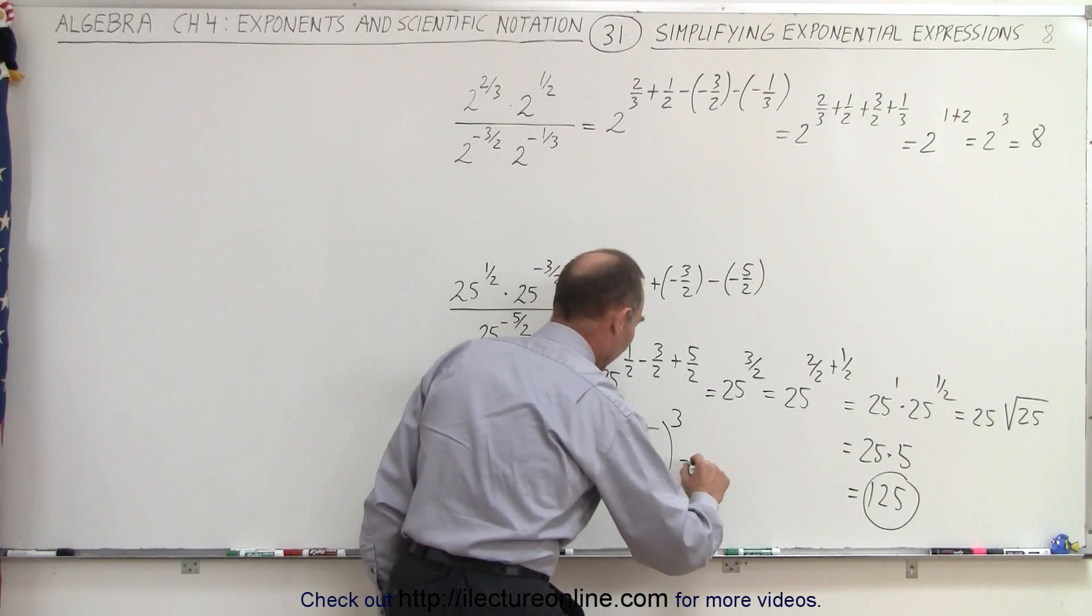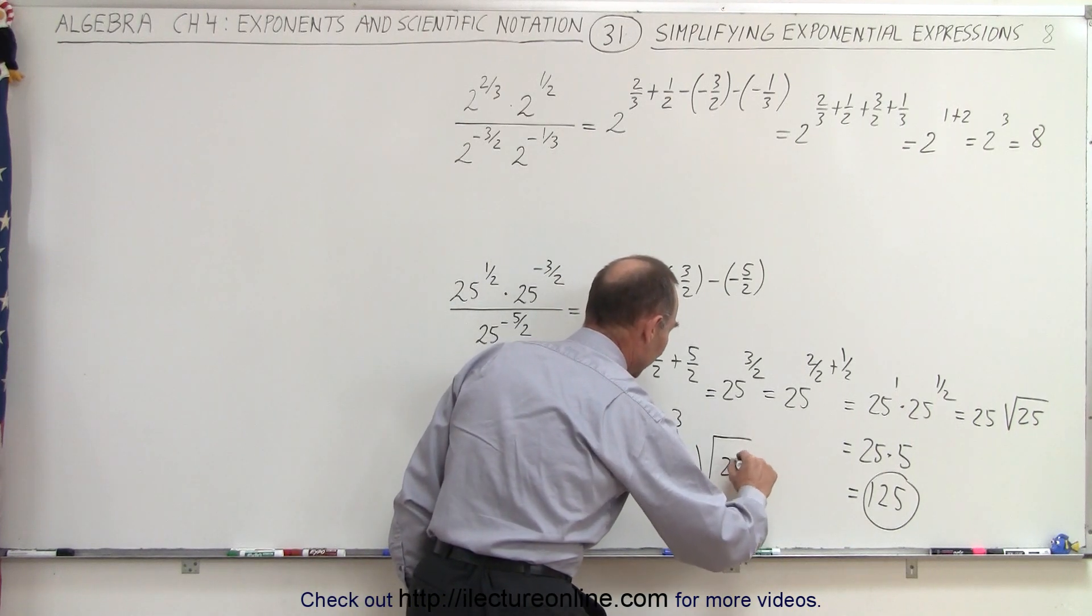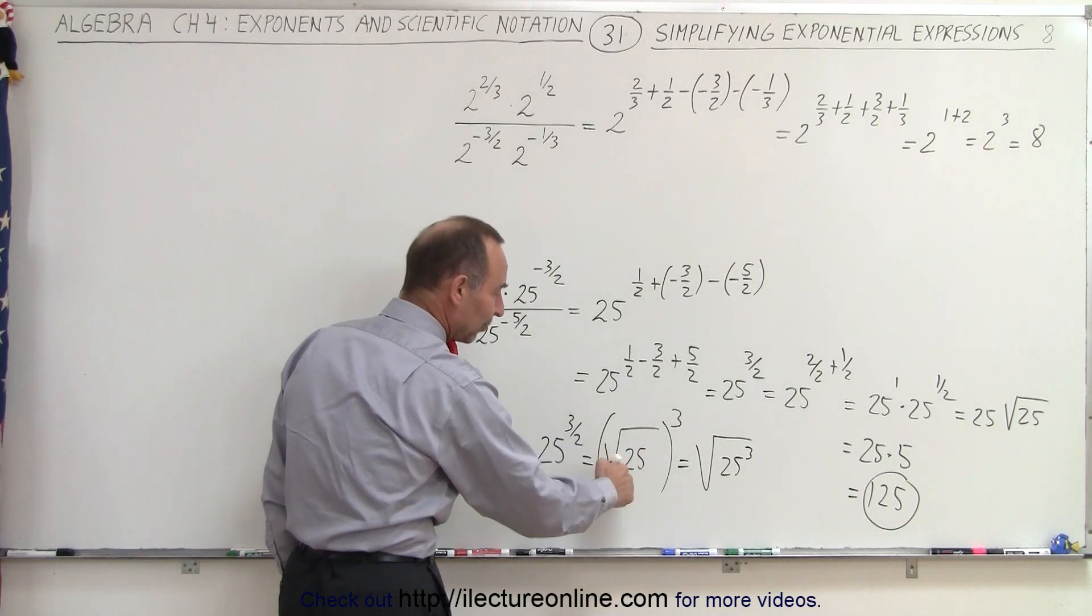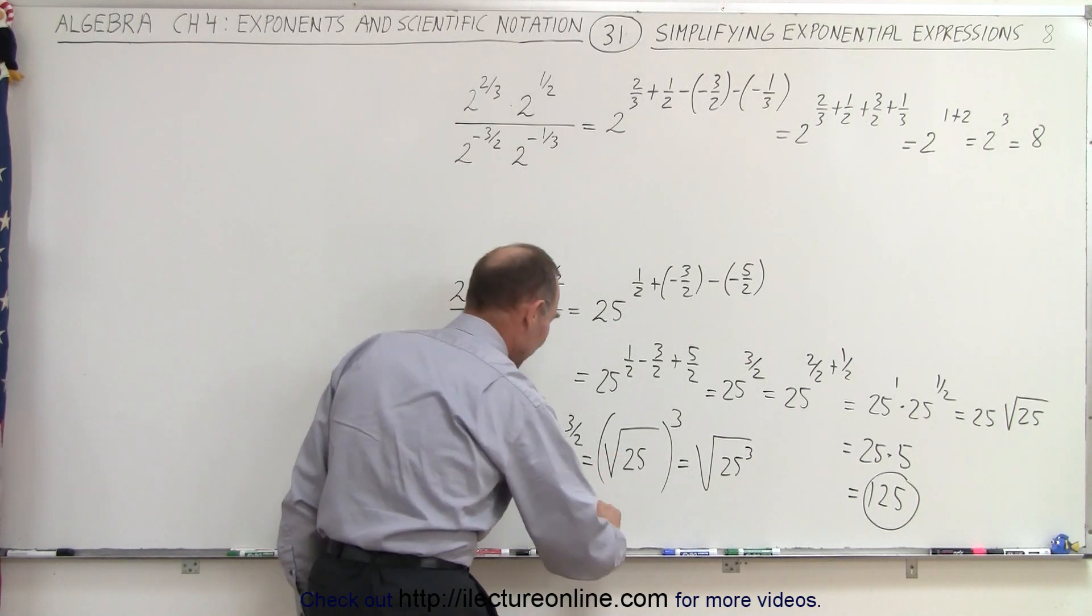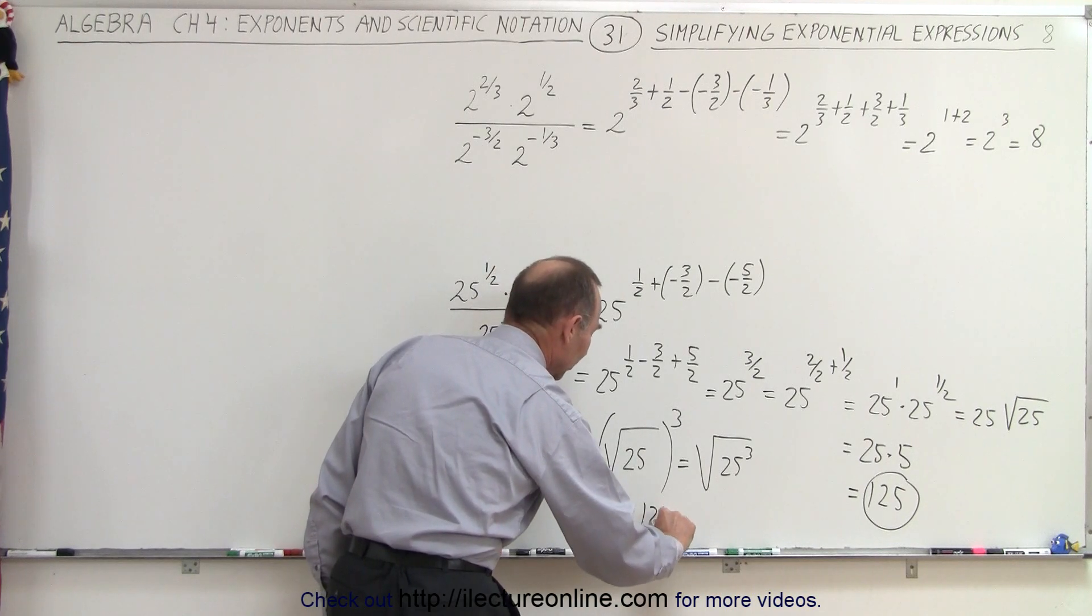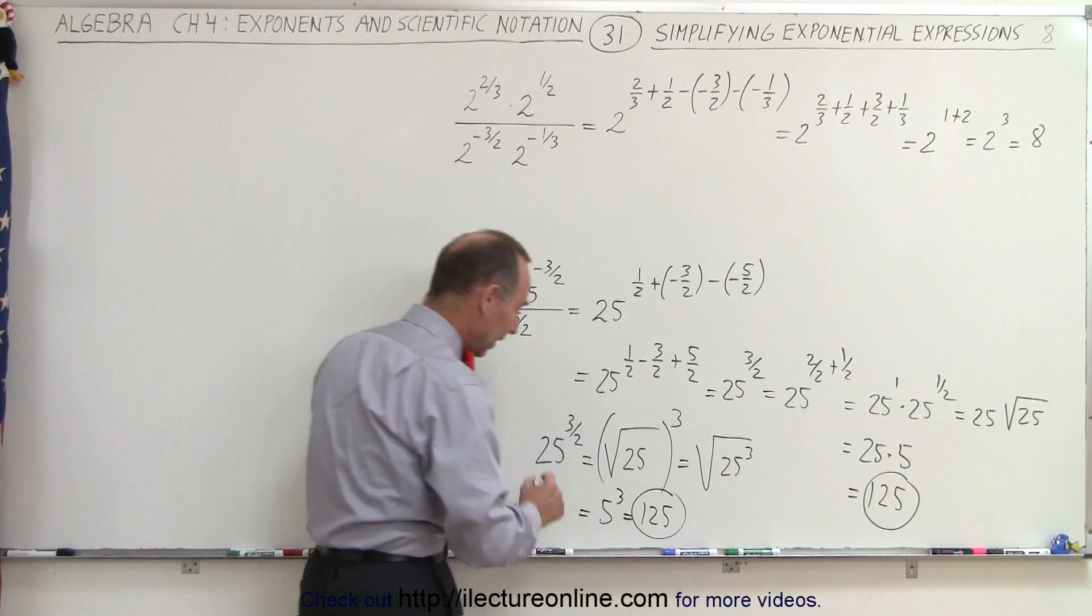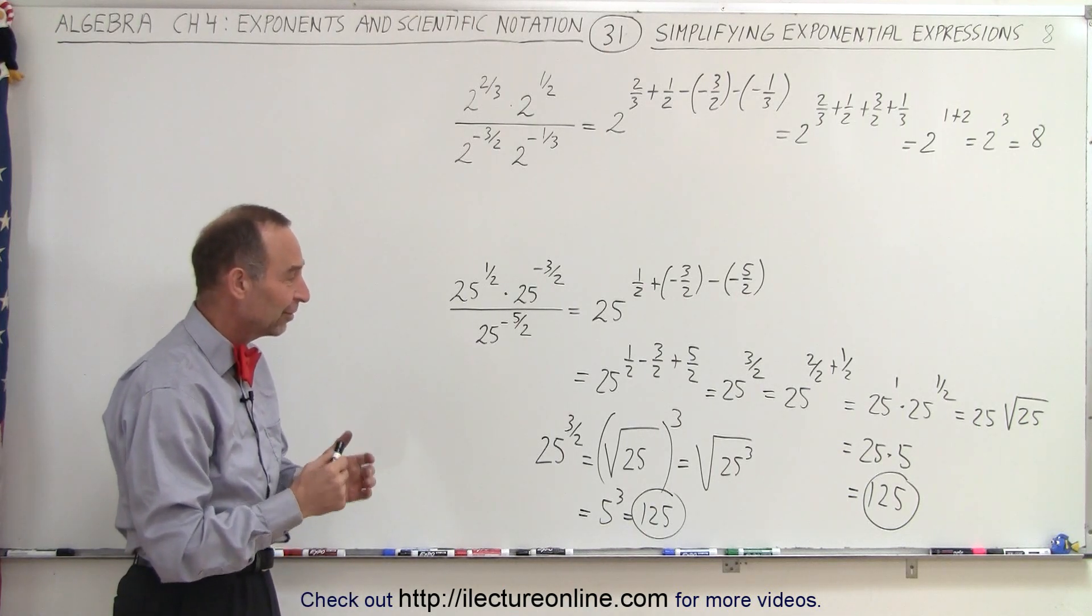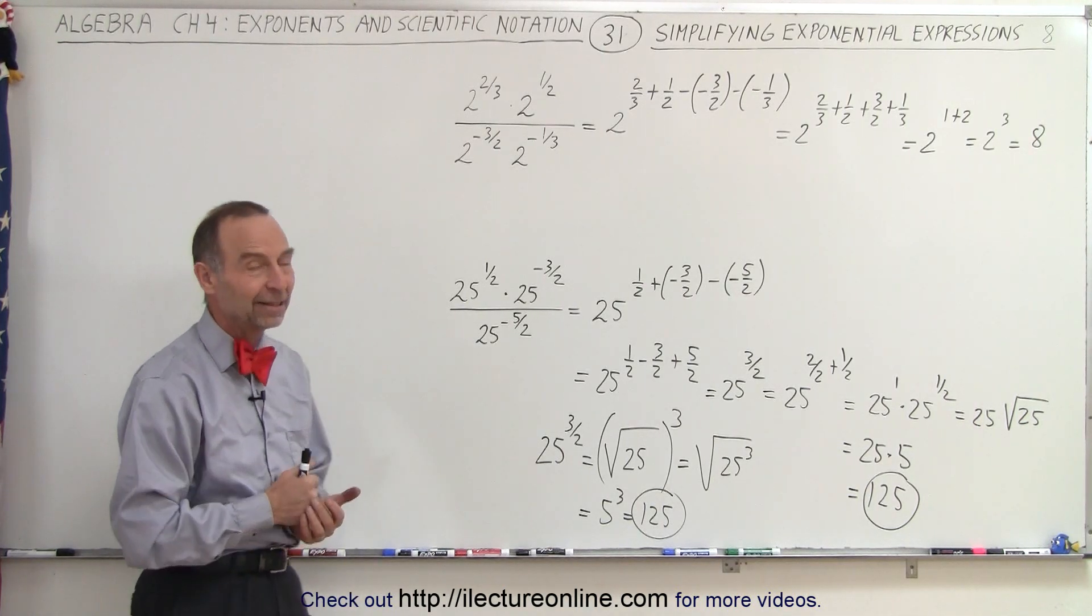Or you could write this as the square root of 25 to the 3rd power. But if we think of it like this, if we take the square root of 25, this is equal to 5 to the 3rd power, which is 125. So again, notice there's lots of different ways to get to the very same result. And that is how it's done.